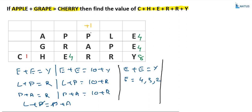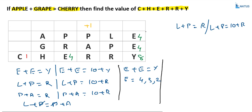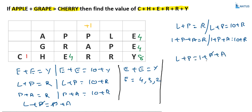Now, considering: L plus P equals R, and 1 plus P plus A equals R. Taking these two equations together: L plus P equals 1 plus P plus A. The P's get cancelled, giving L equals 1 plus A. That means L and A are consecutive numbers.